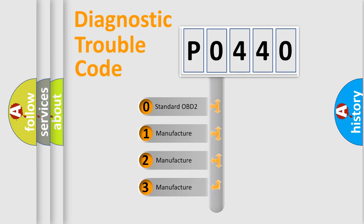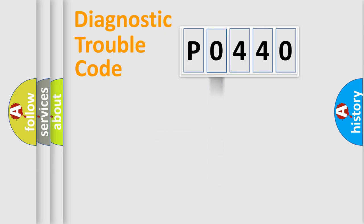If the second character is expressed as zero, it is a standardized error. In the case of numbers 1, 2, or 3, it is a manufacturer-specific expression of a car-specific error.